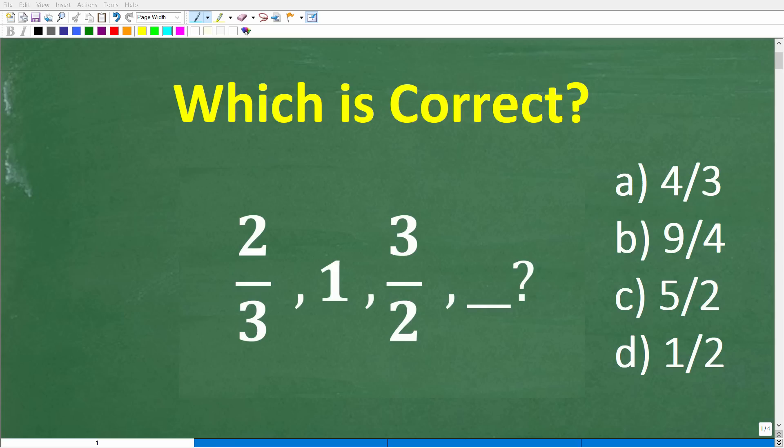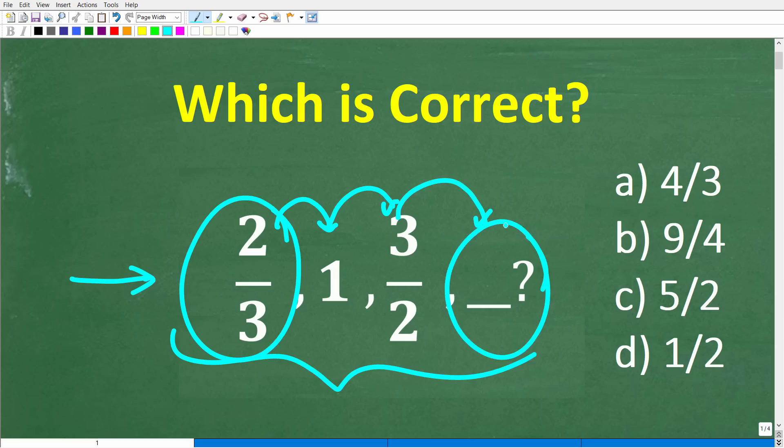If you're pretty good with numbers and basic math and you enjoy things like solving puzzles and riddles, this is the perfect little problem for you. We have a pattern of numbers here. Our first number is two-thirds, then we have one, and then we have three-halves. What is the next number in this pattern?